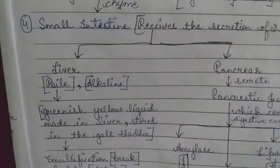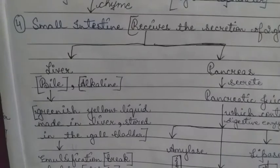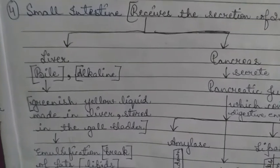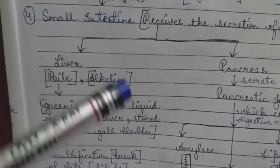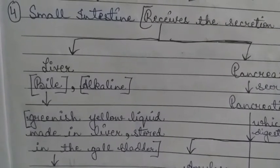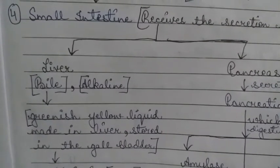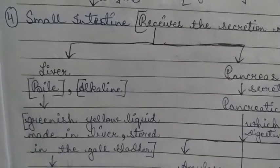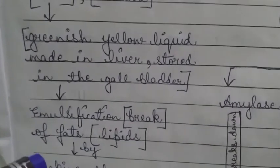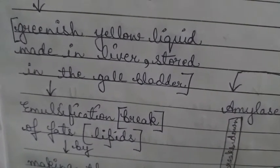The small intestine receives secretions from two glands: the liver and the pancreas. The liver is a gland that helps in fat digestion. It secretes bile juice, which is alkaline in nature and a greenish-yellow liquid. Bile is produced in the liver but temporarily stored in the gallbladder. The function of bile is emulsification — the breakdown of lipids or fats.